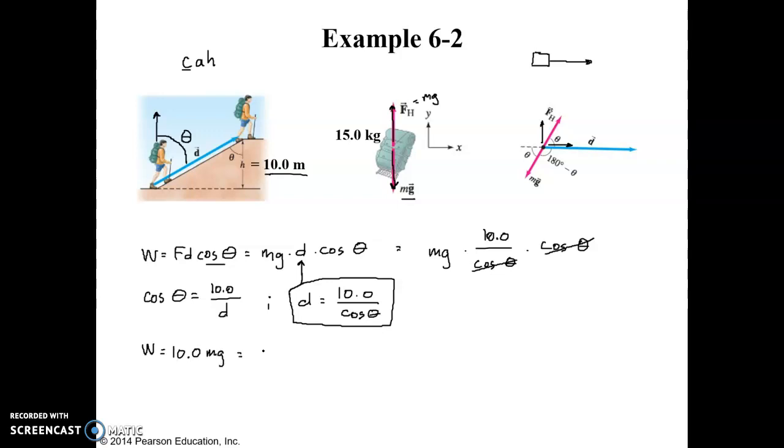And so this equation now becomes work is equal to 10.0 times mg. Okay, and so 10.0 times the mass of the backpack is 15 kilograms, 15.0 kilograms, and the acceleration due to gravity is 9.80 meters per second squared.